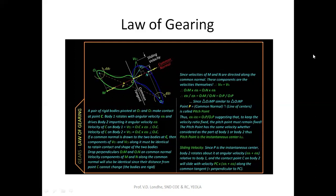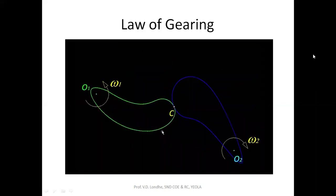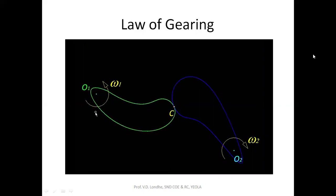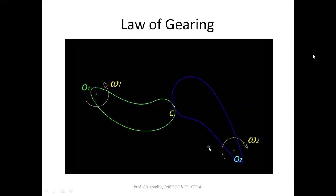We are going to derive the law of gearing. We start with two rigid bodies shown in green and blue, both pivoted so they can rotate about O1 and O2 respectively. The green body rotates with angular velocity omega 1 and, making contact with the blue body at point C, pushes it to rotate at angular velocity omega 2. If these were ideal gears, the ratio omega 1 to omega 2 would remain constant.